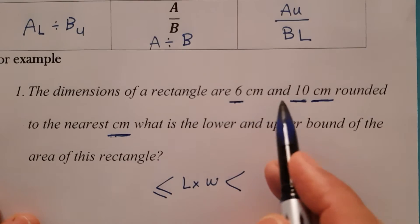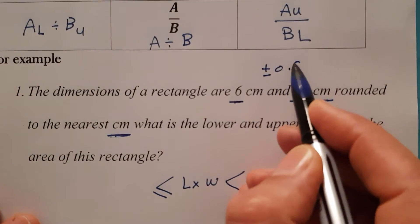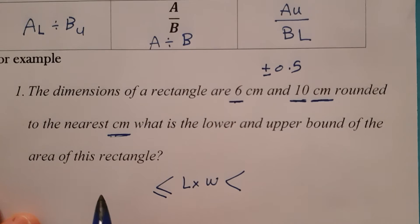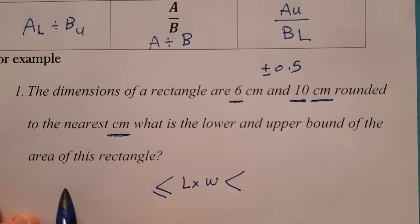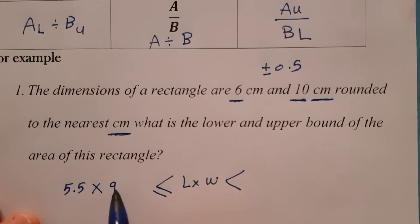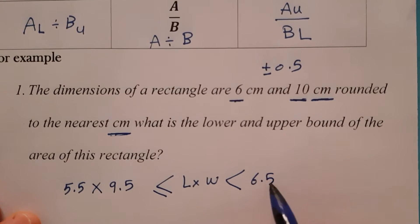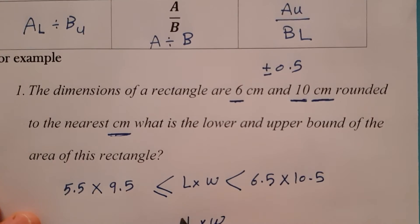Since each number is measured to the nearest unit, subtract half and add half to get lower and upper bounds. The lower bound of 6 is 5.5, and the lower bound of 10 is 9.5. The upper bound of 6 is 6.5, and the upper bound of 10 is 10.5.